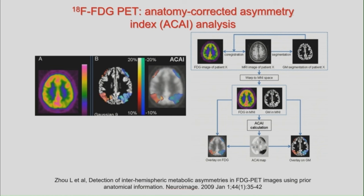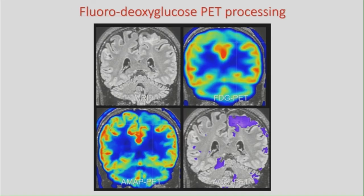PET is commonly used to highlight brain regions with abnormal metabolism. When FDG uptake is compared between hemispheres on visual analysis, confusion can arise because it may be difficult to determine whether an observed asymmetry is physiologic or pathological. We described and routinely use a new method calculating an anatomy-corrected asymmetry index (ACAI) to highlight inter-hemispheric metabolic asymmetry in FDG images without the influence of anatomical asymmetry. Using paired anatomical information from MRI, the ACAI method only takes into account voxels belonging to a certain anatomical class. So when I present the PET images, I can use the usual PET data, the AMAP PET, and the ACAI PET.